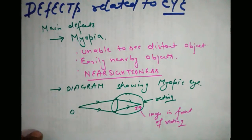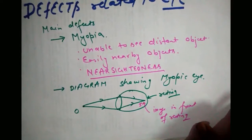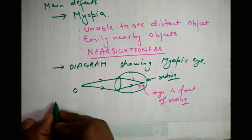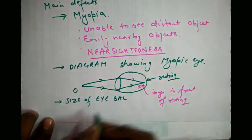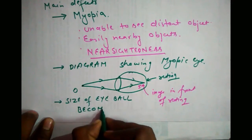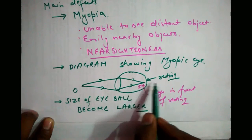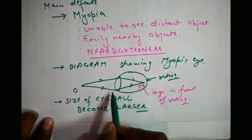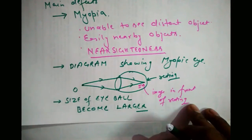In myopia, a person is unable to see far objects. This may be because the size of the eye lens becomes bigger or larger. When the eyeball becomes larger, the retina shifts backward. The power of the converging lens is fixed, so it only converges the rays before the retina, and a proper image is not formed in the eye.